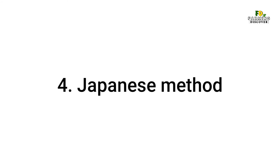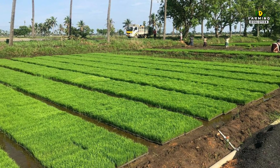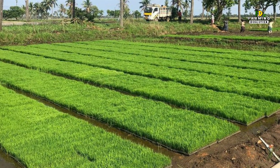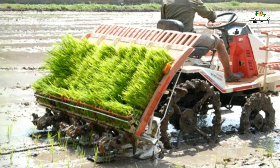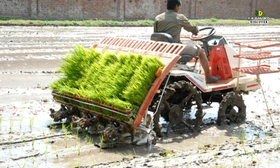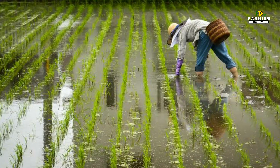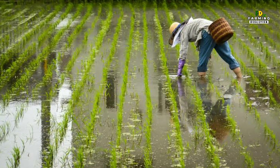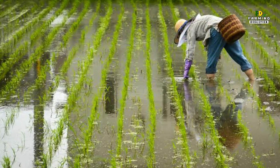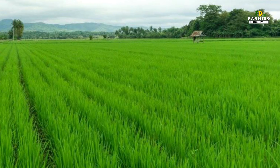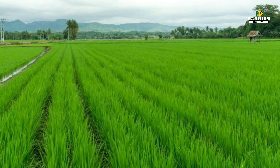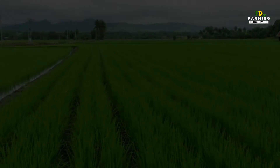4. Japanese method: the Japanese method includes the use of high-yielding seed varieties, sowing the seeds in a raised nursery bed, and transplanting the seedlings in rows to make weeding and fertilizing easy. It also involves the use of a heavy dose of fertilizer so that very high yields are obtained. But at the same time, it gives some of the highest crop yields.